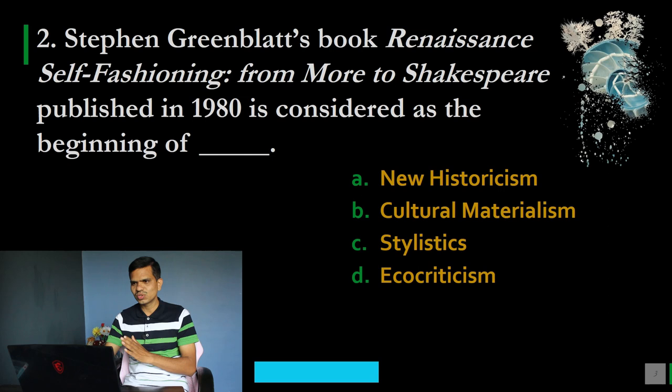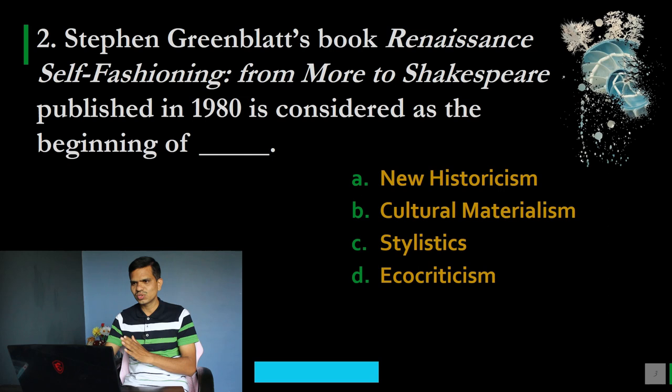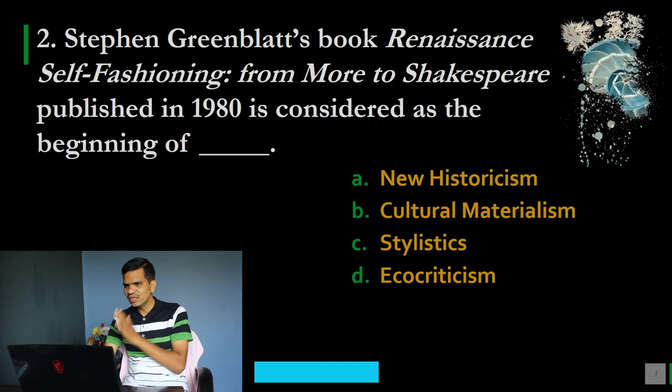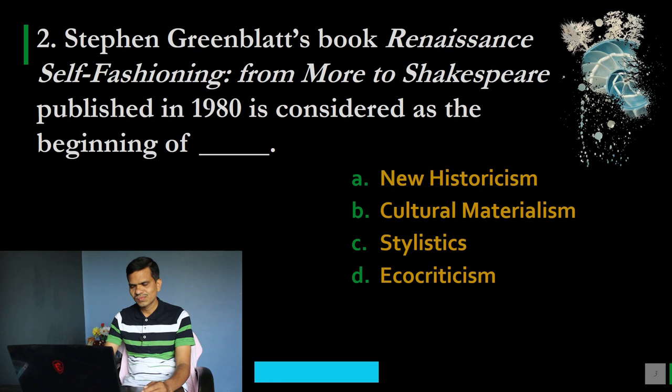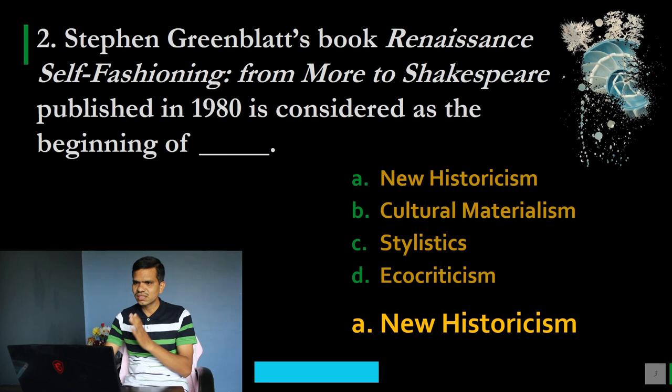Question number 2: Stephen Greenblatt's book Renaissance Self-Fashioning from Moore to Shakespeare, published in 1980, is considered as the beginning of which theory? Options: A. New historicism, B. Cultural materialism, C. Stylistics, D. Ecocriticism. The correct answer is option A, New historicism. This book is considered the beginning of new historicism, inaugurating this area of criticism in 1980.